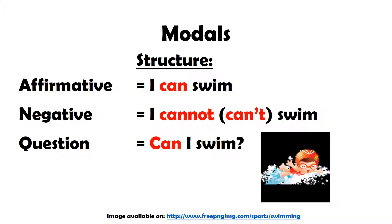The affirmative is I CAN SWIM. In the negative, there are two ways: CANNOT or CAN'T. CAN'T is the contraction. And when we are asking someone, the question is CAN I SWIM? CAN changes place with the subject. We can say: CAN I SWIM? CAN YOU SWIM? CAN SHE SWIM?